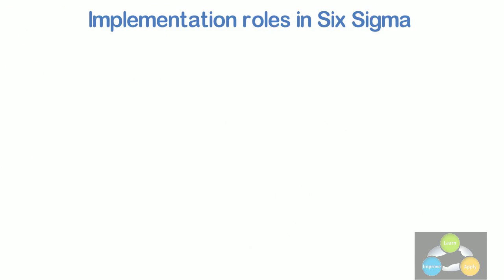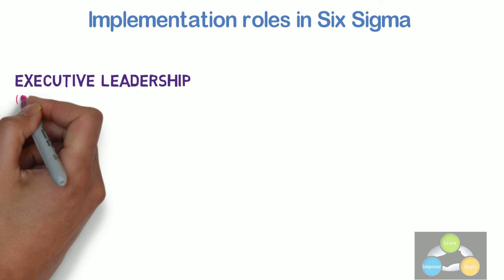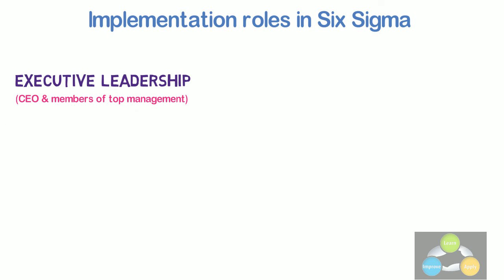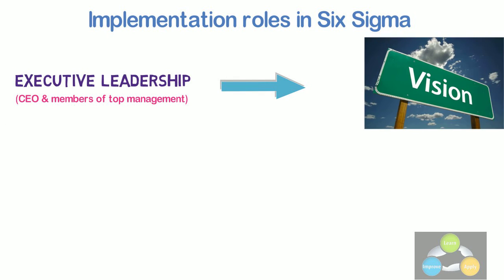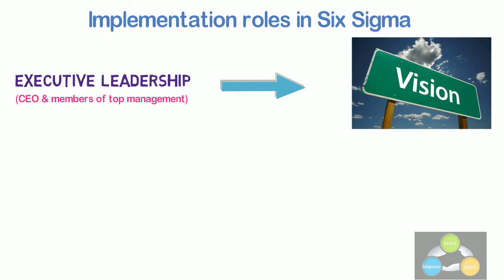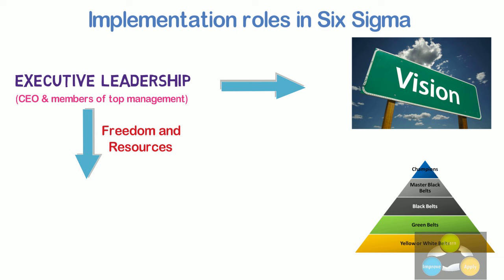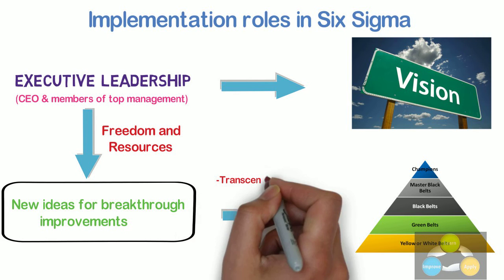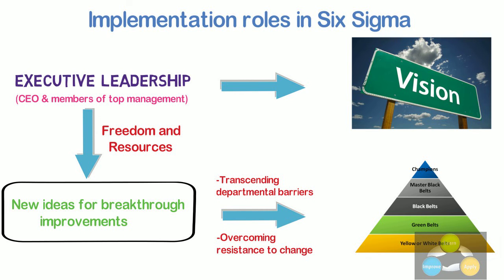Implementation roles. Six Sigma identifies several key roles for its successful implementation. Executive leadership includes the CEO and other members of the top management. They are responsible for setting up a vision for Six Sigma implementation. They also empower the other role holders with the freedom and resources to explore new ideas for breakthrough improvements by transiting departmental barriers and overcoming the inherent resistance to change.